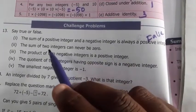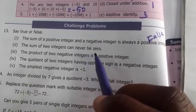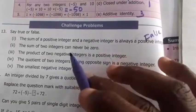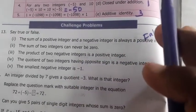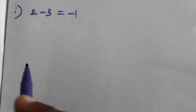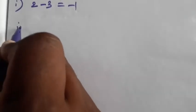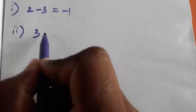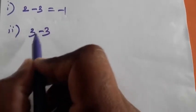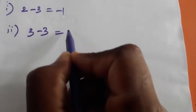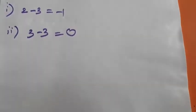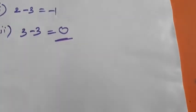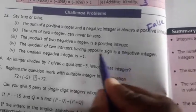Second one: the sum of two integers can never be zero. Zero is always a positive integer — that's true. But here, the sum of two integers can be zero. Therefore, the given statement is false. So the thirteenth answer is also false.